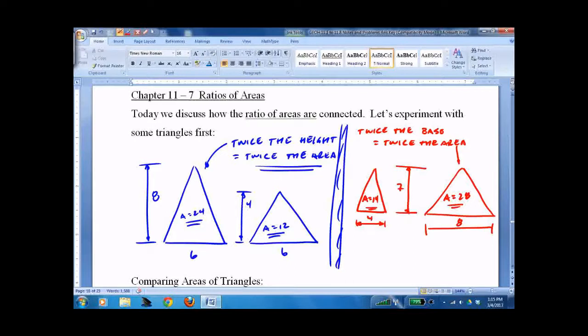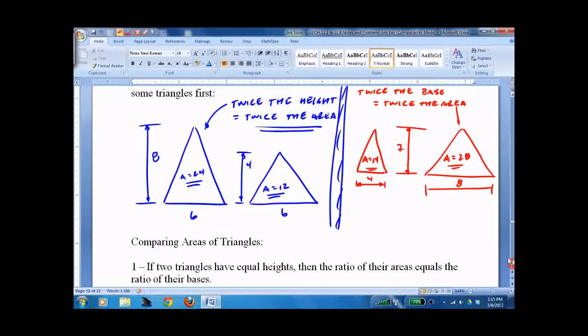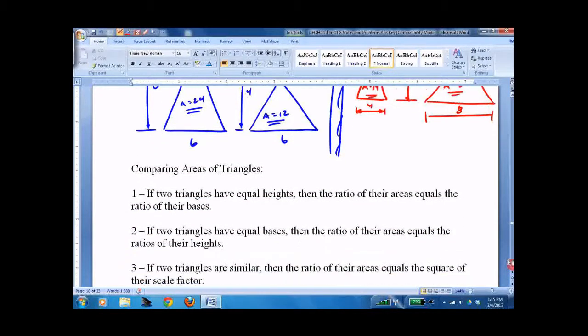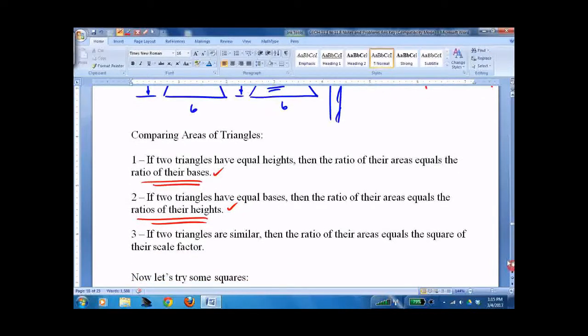These are pretty simple, nothing complicated. Of course, the example I'll give you won't have numbers. You have to look at it and think about it. If two triangles have equal heights, then the ratio of their areas equals the ratio of their bases. If two triangles have equal bases, then the ratio of their areas equals the ratio of their heights.